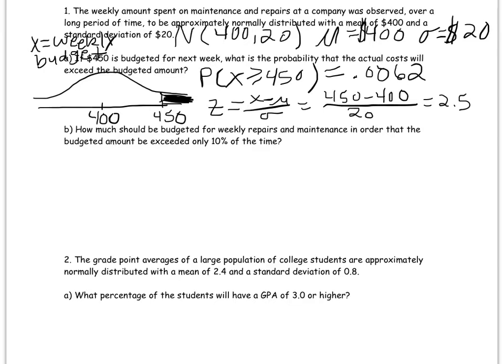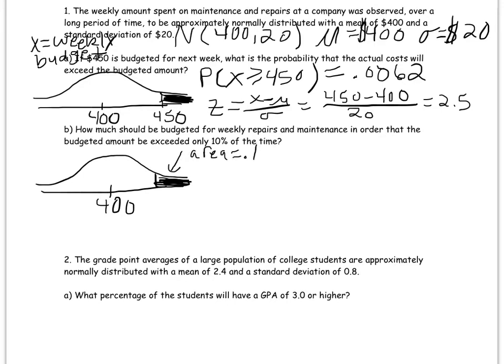Now let's move on to Part B. How much should be budgeted for weekly repairs and maintenance so that the budget amount is exceeded only 10% of the time? This is the inverse problem. I draw my picture with the mean at 400 in the middle. I know the probability of exceeding this budget is 10%, so the area in the right tail is 0.10. But I don't know the budget amount — that particular X value is what I'm solving for. I don't need the normal CDF function here because I already know the area; I want the calculator to tell me the Z-score.